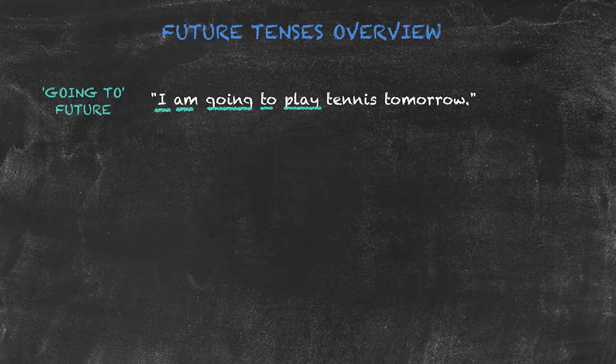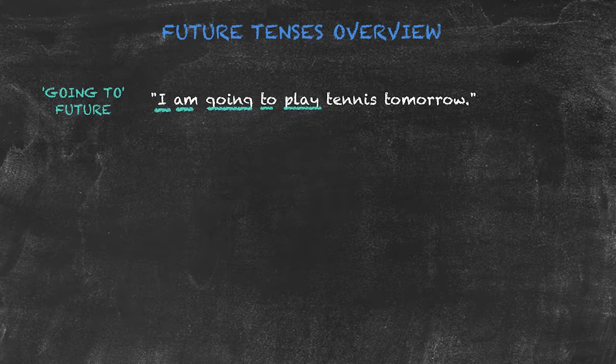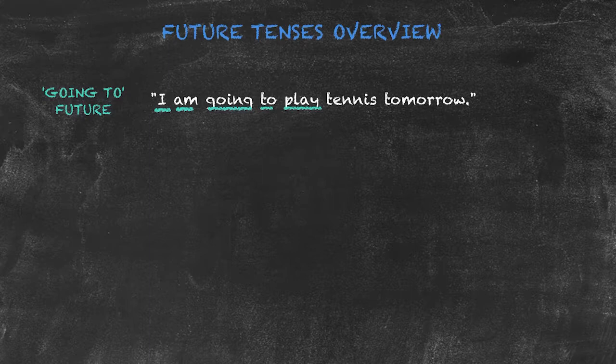The 'going to' future, unlike the future simple, is used to express plans or intentions—things that have already been decided before the moment of speaking. The 'going to' future is also used for predictions, whereas the future simple uses predictions without evidence.